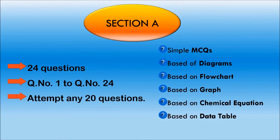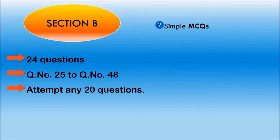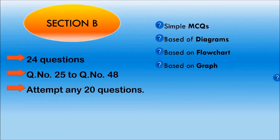Section B also consists of 24 questions, from question number 25 to question number 48. Here also, you have to attempt any 20 questions. And the type of questions being asked here are, again, simple MCQs or MCQs based on diagrams, flowchart, graph or chemical equation and even data table.